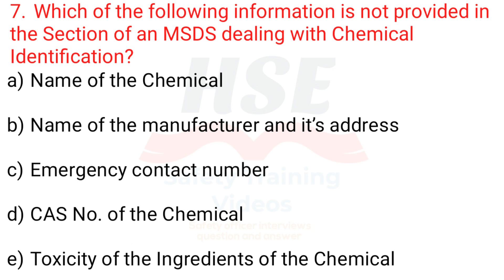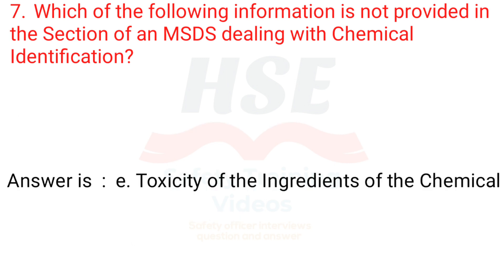Question 7: Which of the following information is not provided in the section of an MSDS dealing with chemical identification? A. Name of the chemical, B. Name of the manufacturer and its address, C. Emergency contact number, D. CAS number of the chemical, E. Toxicity of the ingredients of the chemical. The answer is E. Toxicity of the ingredients of the chemical.